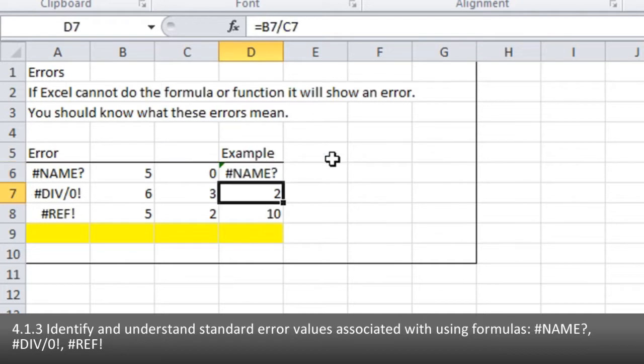Divide by zero is a pretty straightforward error. This calculation is doing B7 divided by C7, and the C7 here is a three. If I change that three to a zero, that's a mathematical impossibility. You can't divide things by zero, and so Excel is telling you that.